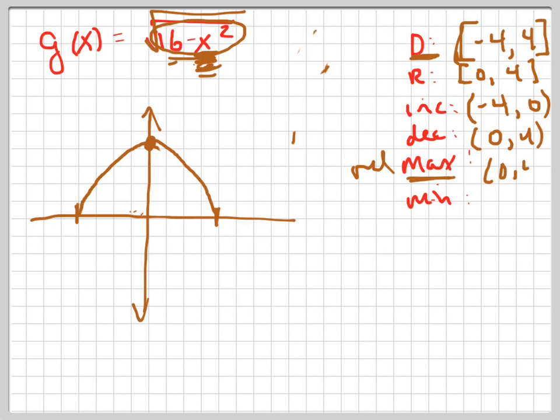No, it's going to be 0, 4. Actually, you're right. I think the relative max is just 4. Wouldn't it just be like, it's probably just 4.